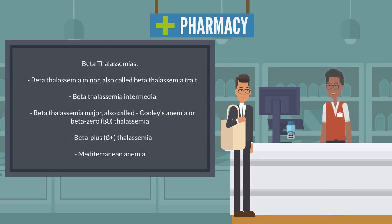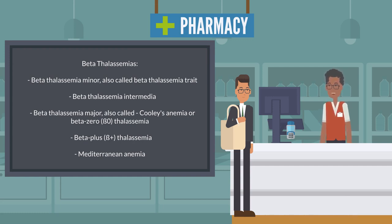Beta-thalassemias: Beta-thalassemia minor (also called beta-thalassemia trait), beta-thalassemia intermedia, beta-thalassemia major (also called Cooley's anemia or beta-0 thalassemia), beta-plus thalassemia, and Mediterranean anemia.